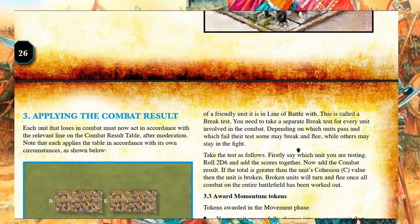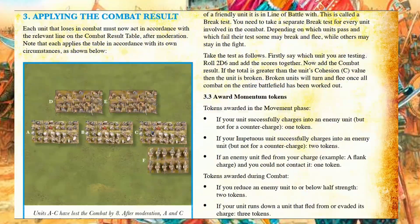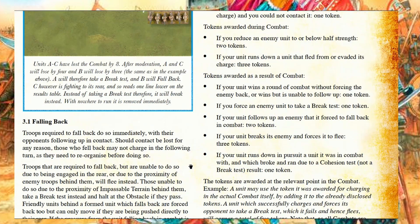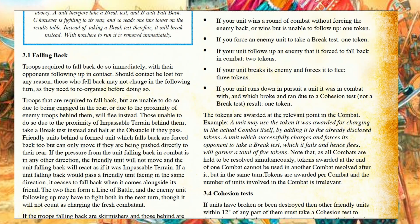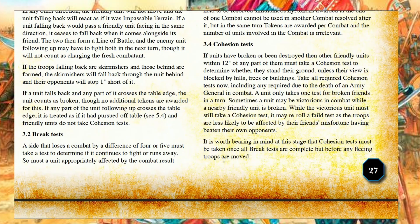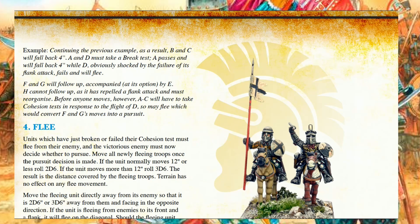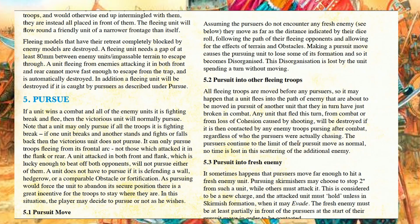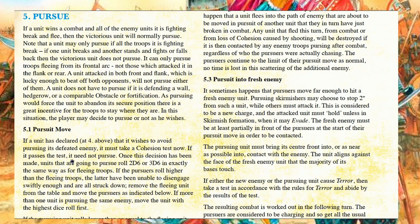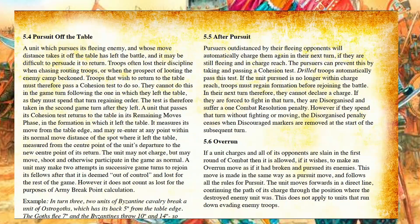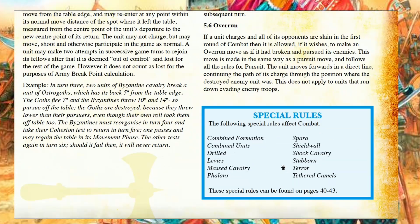Then we're talking about the death of commanders, applying combat results, and awarding momentum tokens. Depending on what actions you perform you get momentum tokens, which you can use to boost your attack or initiative. Then cohesion tests — how they happen. Then fleeing and pursuing fleeing troops, pursue into fresh enemy, pursue move, pursuit off the table, after pursuit, overrun, and special rules.